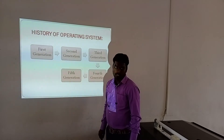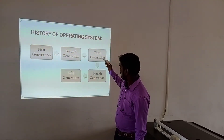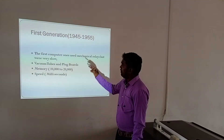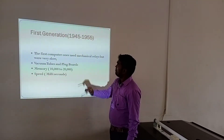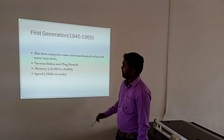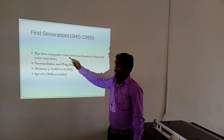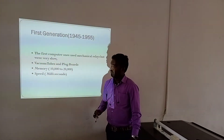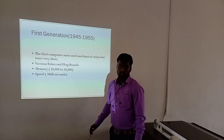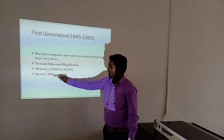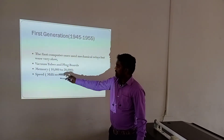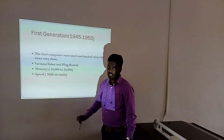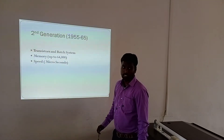First Generation, introduced in 1942–1955. The first computers used mechanical relays and vacuum tubes. They were very slow. Memory was 10,000 to 20,000 characters, and speed was in milliseconds.